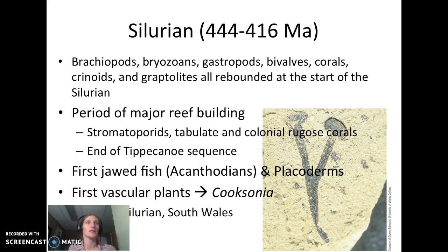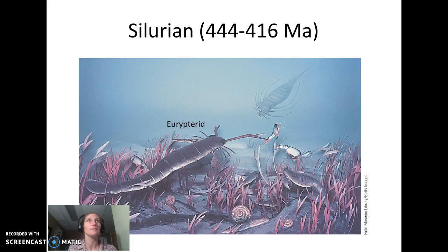We also start to see the first appearance of jawed fishes — the acanthodians and the placoderms, which I'll discuss more in the Devonian. On land we do start to see our first vascular plants. The picture here is an image of Cooksonia from the Upper Silurian, found in West South Wales. We can actually see that very simple vascular form — small plants that would have been living just above the sea.